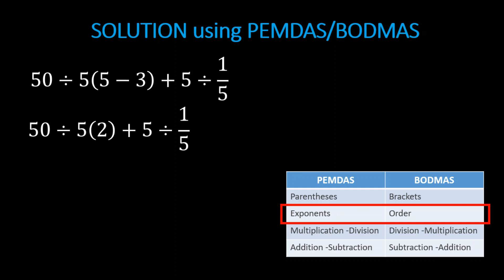But since we don't have that either, let's just copy the same expression: 50 divided by 5, the same with the above, parenthesis 2, plus 5 divided by the fraction 1 over 5.